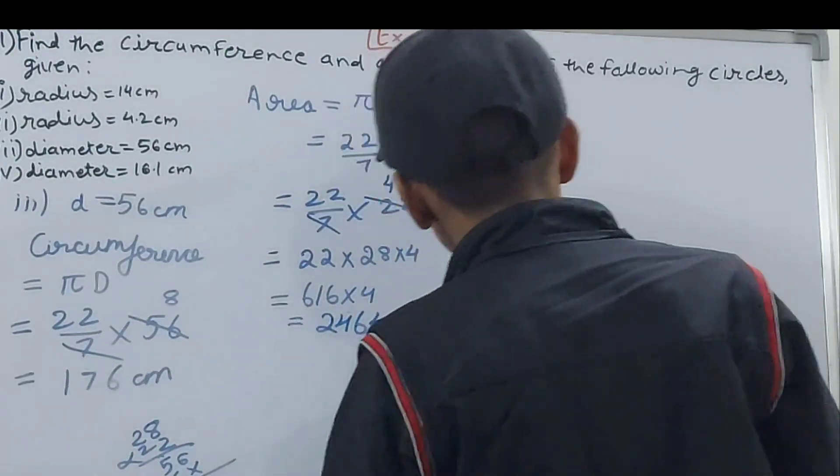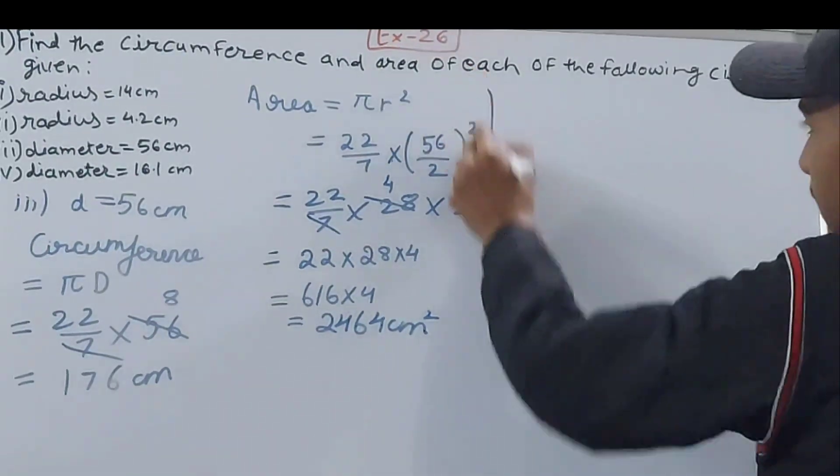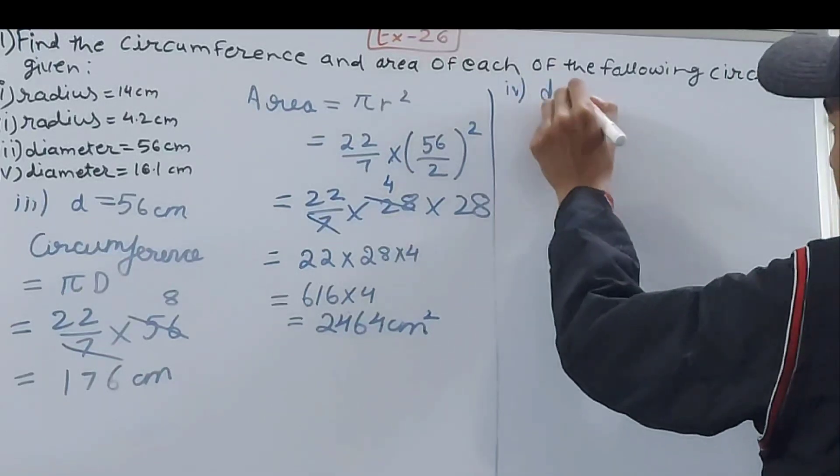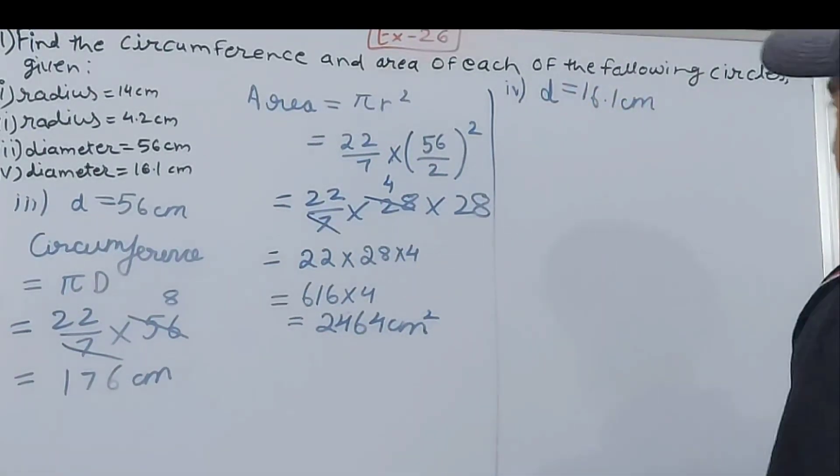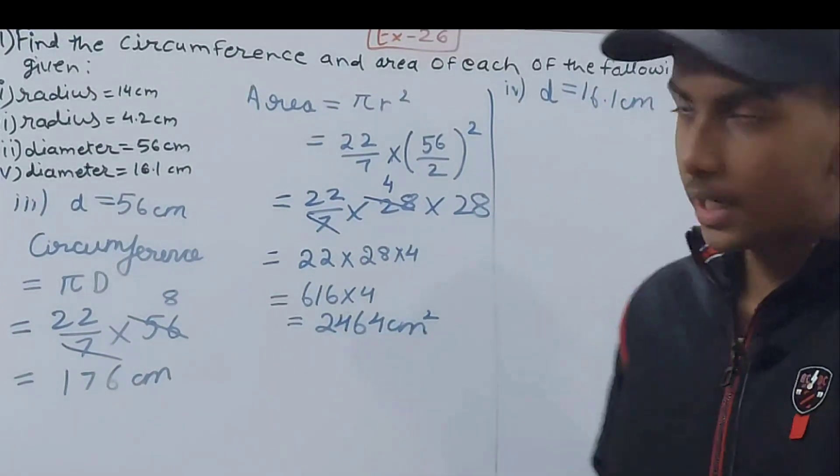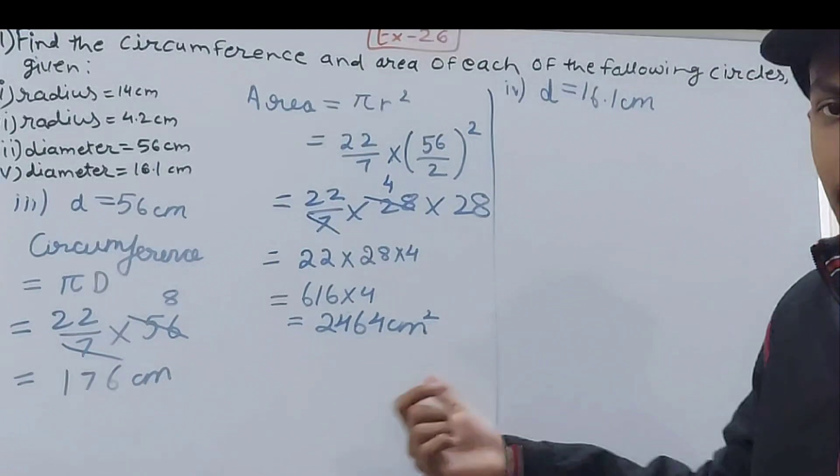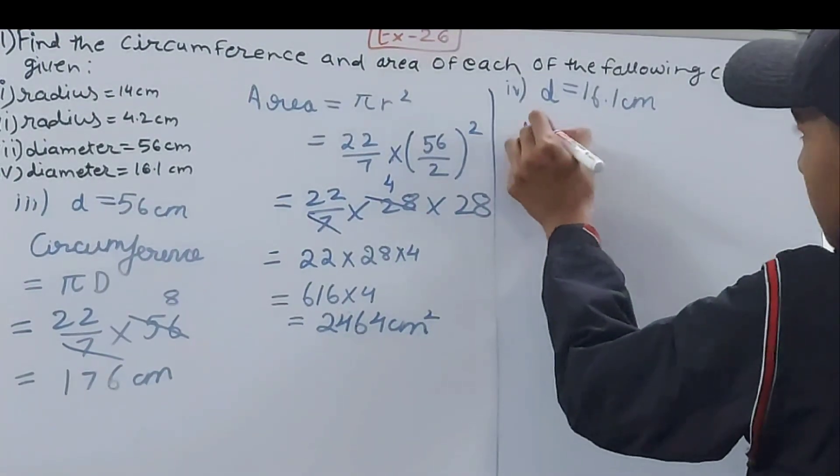Now let's do the next part here as well. We've got the fourth one and this time my diameter is 16.1 centimeters. Again we will calculate the radius for calculating the area and the diameter for the circumference.